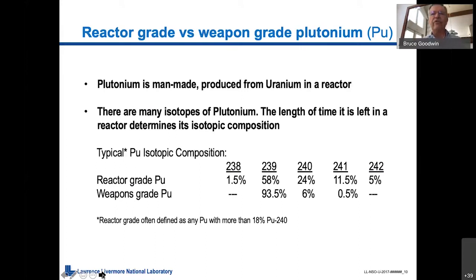So reactor-grade versus weapons-grade plutonium. All plutonium is man-made. It's produced from uranium-238 in a nuclear reactor. And then 238 is not a fissile uranium atom, but if you expose it to neutrons, you can make plutonium out of it.